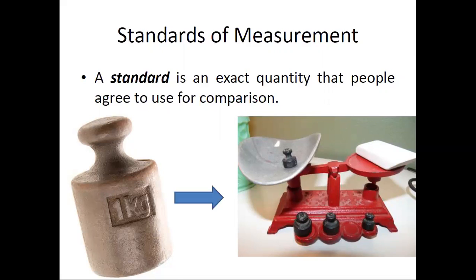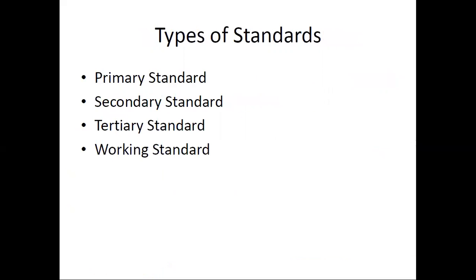There are basically three to four types of standards. Let us see the types of standards: primary standard, secondary standard, tertiary standard, and working standard. Primary, secondary, and tertiary are standards we do not use exactly for the measurement purpose — we use working standards for measurement. We will see what happens with primary, secondary, and tertiary standards in detail.